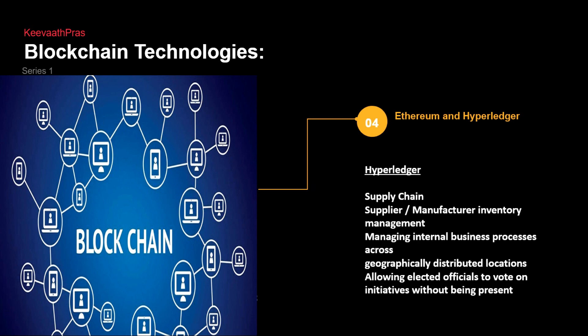Hyperledger comes from the supply chain industry. Its use cases include supply chain management, inventory management, managing internal business processes across geographically distributed locations, and allowing elected officials to vote on initiatives without being physically present. If you select a person, that person will act on your behalf. These are the high-level differences between Ethereum and Hyperledger.